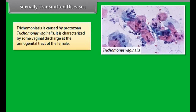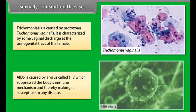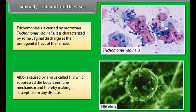Trichomoniasis is caused by the protozoan Trichomonas vaginalis. It is characterized by vaginal discharge at the urinogenital tract of the female. AIDS is caused by a virus called HIV, which suppresses the body's immune mechanism, thereby making it susceptible to any disease.